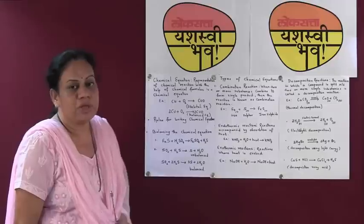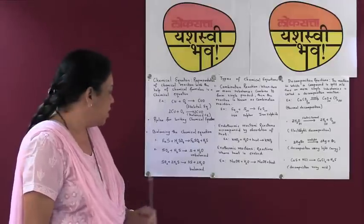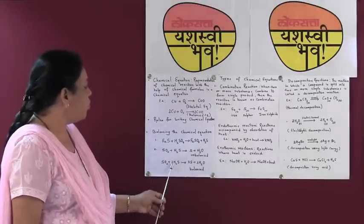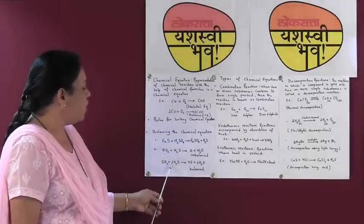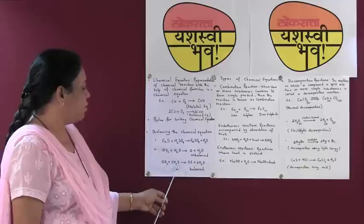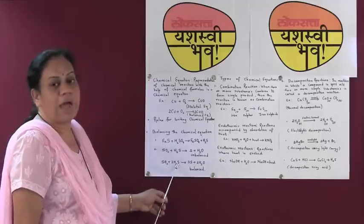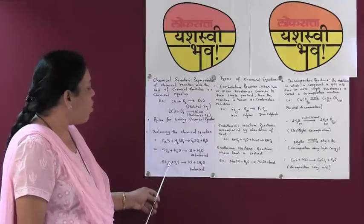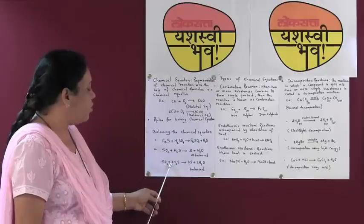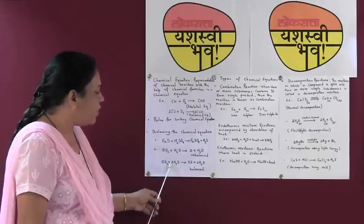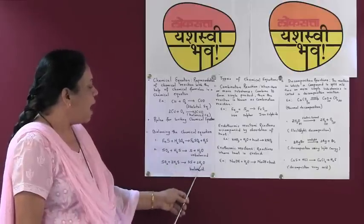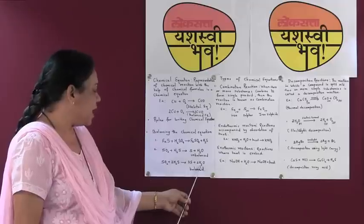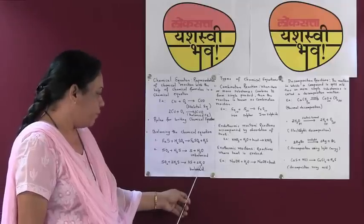Therefore we need to put a coefficient of 2 before hydrogen sulphide, so that we have 4 atoms of hydrogen on the left hand side and 4 atoms of hydrogen on the right hand side as well.